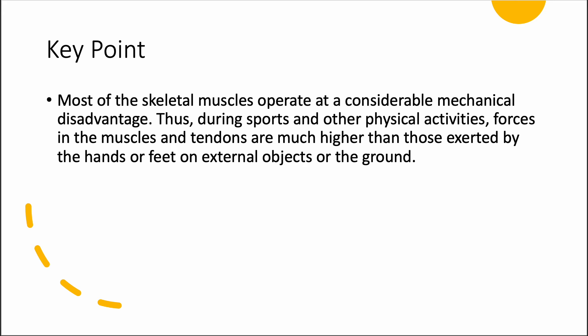Most skeletal muscles operate at a considerable mechanical disadvantage — two out of three lever types are always in a disadvantage. We have to provide more force to overcome the resistance applied. Forces in muscles and tendons are much higher than those exerted by the hands or feet on external objects. That's why you can lift more with the lower body than the upper body, due to differences in musculature and the tendons applied.